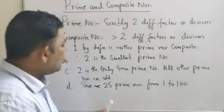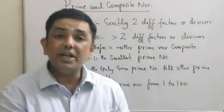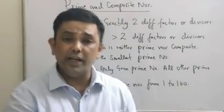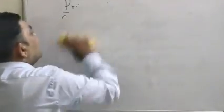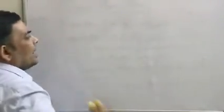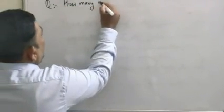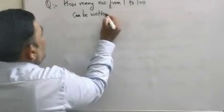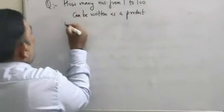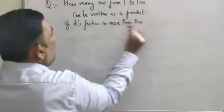Now if you are wondering how this can be used to form a question, let me share with you how questions in competitive exams can be framed beautifully. Please do remember we are talking about the property that there are 25 prime numbers from 1 to 100. Now let me write this question: how many numbers from 1 to 100 can be written as a product of its factors in more than one way?